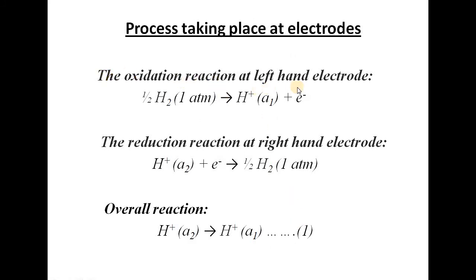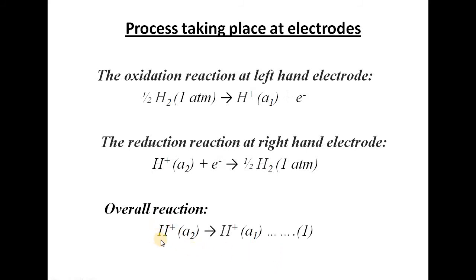The oxidation reaction at the left: hydrogen gas releases electrons to give hydrogen ions. Reduction at the right: hydrogen ions take up electrons to convert to hydrogen gas. Adding both reactions, the overall reaction is transfer of 1 gram equivalent or 1 mole of H⁺ ion from the solution of activity A2 to the solution of activity A1.